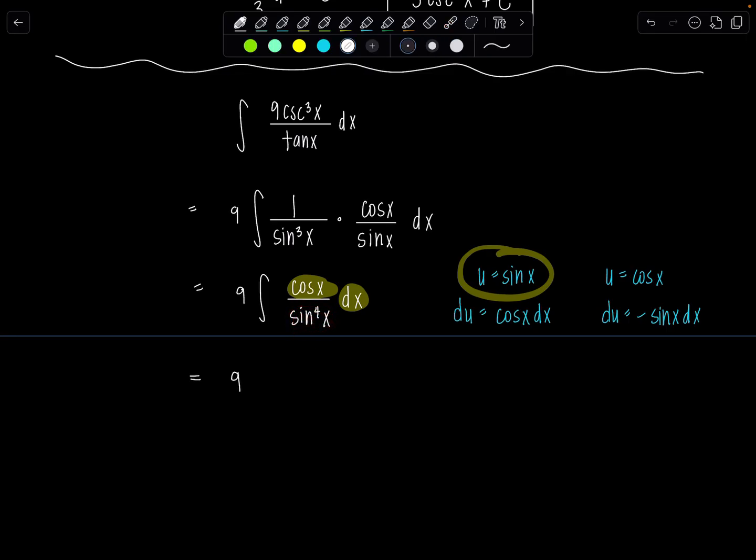So we've got nine integral. All of this cosine x dx, that's just du. Oh, how lovely. Over sine to the fourth x would be u to the fourth. Are we all right? Oh, good. So I can rewrite this nine integral u to the negative fourth du.